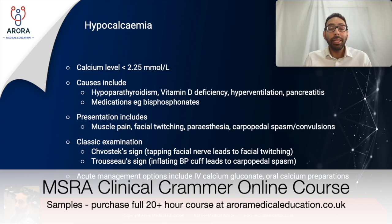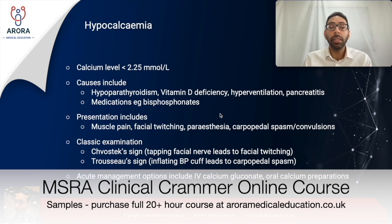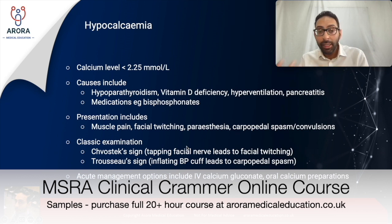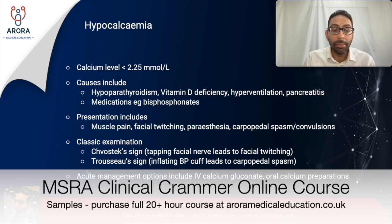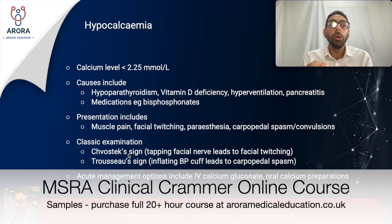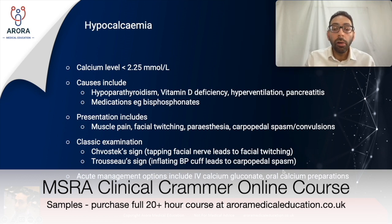Switching to hypocalcaemia — a calcium level of less than 2.25. Causes include hypoparathyroidism, vitamin D deficiency, hyperventilation, pancreatitis, and medications like bisphosphonates. Presentation can be vague initially with muscle pain, but can include classic facial twitching, carpopedal spasm, or convulsions. Two classic examination signs: Chvostek's sign, where tapping the facial nerve produces facial twitching, and Trousseau's sign, where inflating a BP cuff leads to carpopedal spasm. Acutely, management includes IV calcium gluconate or oral calcium preparations for less severe presentations.